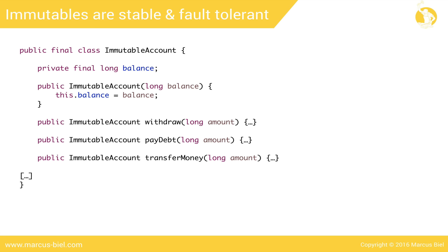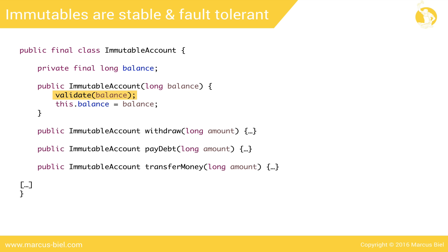The truth is, I tricked you a bit. We don't actually need to validate the balance in each method. An immutable is not changing, so instead we validate the balance once in the constructor, so that no invalid object can be constructed. Once validated, an immutable object will stay valid for its entire lifetime.